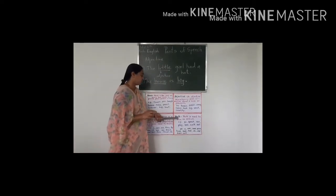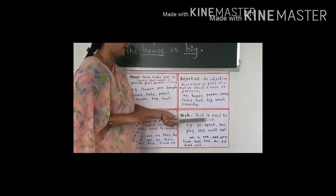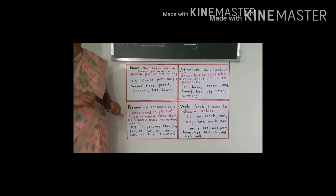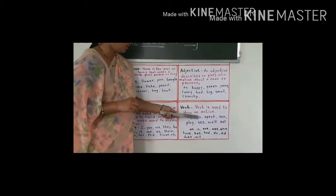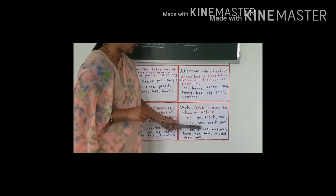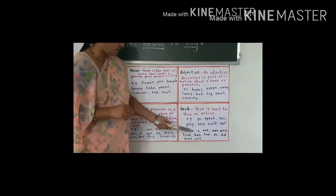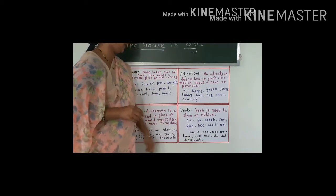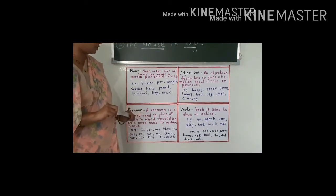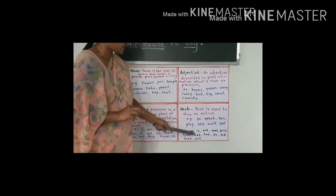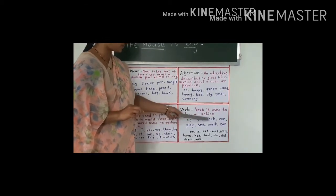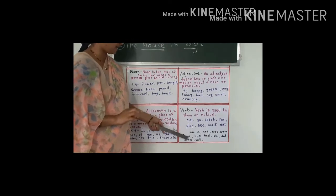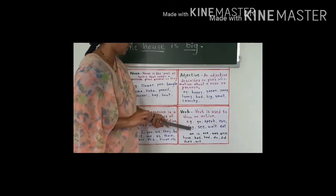The next part of speech is verb. Verb is used to show an action. For example: go, speak, run, play, see, walk, eat. A point to be noted: am, is, are, was, were, have, has, had, do, did, does, will — these are helping verbs because they are used in a sentence to help the main verb. Go, speak, run, play, see, walk, eat — these words are main verbs. Helping verbs are used to complete the meaning of the main verb in a sentence. The helping verb comes before the main verb in a sentence.